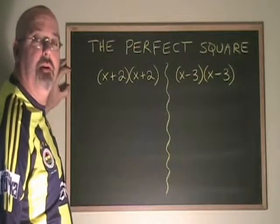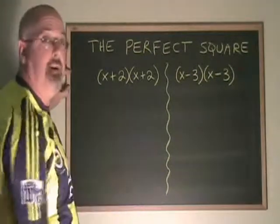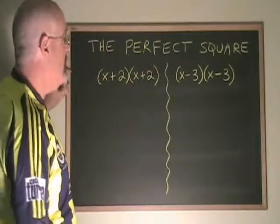The perfect square trinomial is the name of an expression that we get when we multiply a binomial by itself. Let's do that now.